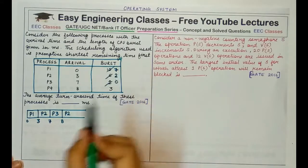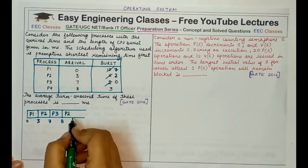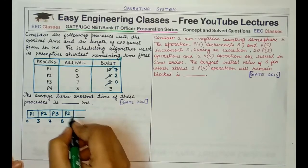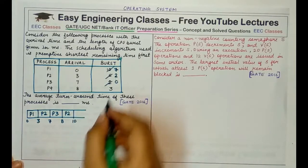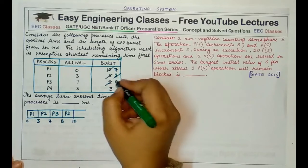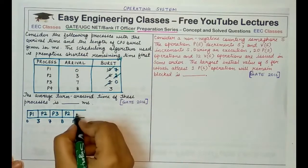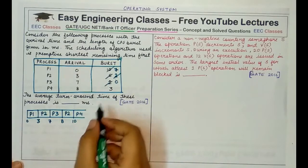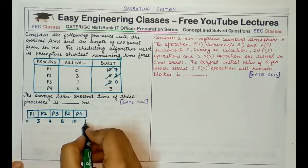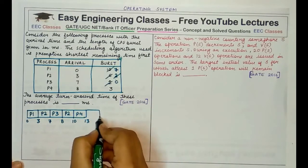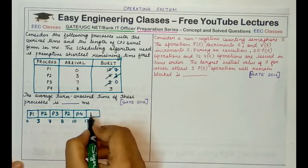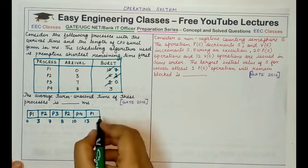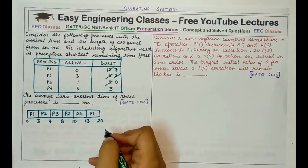We execute P2 for two units, completing at time period ten. Then we schedule P4 for three time units, completing at thirteen. Finally we schedule P1 for its remaining seven units, which runs until time twenty.